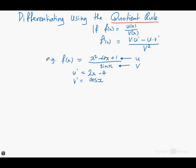And all you need to do now is put them all together. f dash of x is equal to v times u dash minus u times v dash all over v squared. So let's see how this goes. V is sin x, u dash is 2x minus 4.